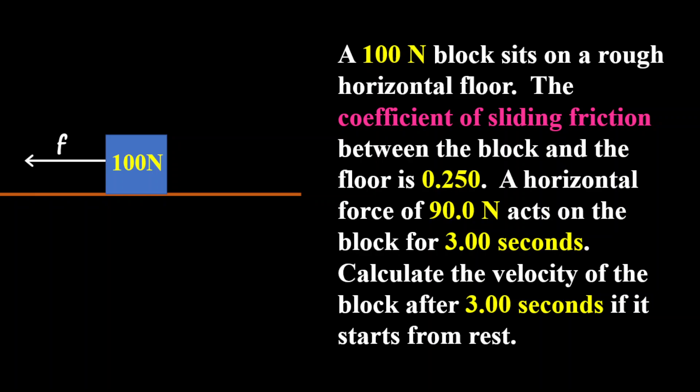We will also have the weight of the object, which is acting downwards, and that is mg, and it is equivalent to 100 Newtons. Opposing the weight is the normal force acting upwards, and that is also equal to 100 Newtons.